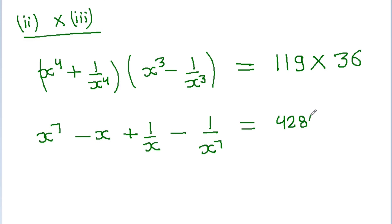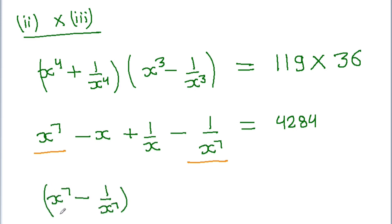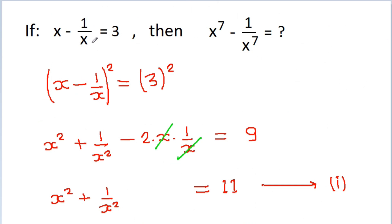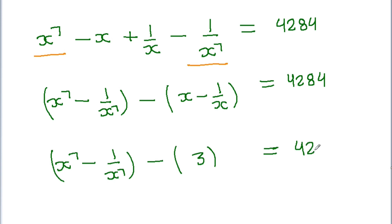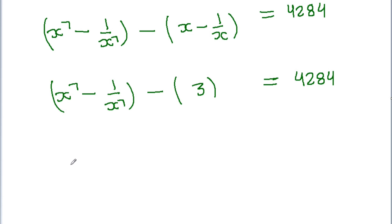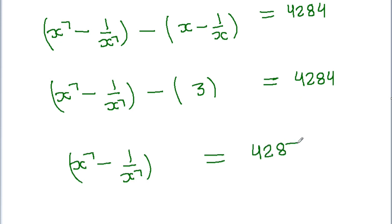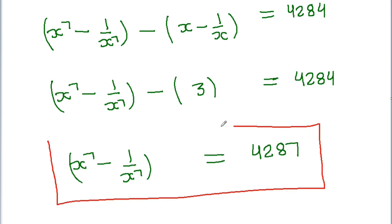So we have x to the power 7 minus 1 by x to the power 7, and taking minus common from the remaining terms we get minus x minus 1 by x equals 4284. Since x minus 1 by x equals 3, we get x to the power 7 minus 1 by x to the power 7 minus 3 equals 4284. Therefore x to the power 7 minus 1 by x to the power 7 equals 4284 minus 3, which is 4281. So the value of x to the power 7 minus 1 by x to the power 7 is 4281.